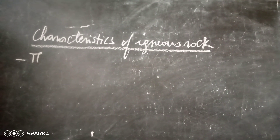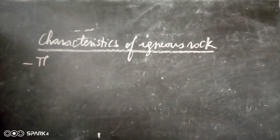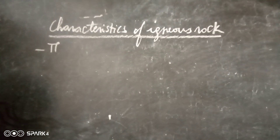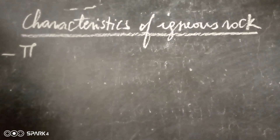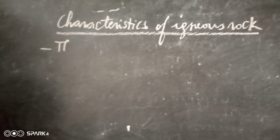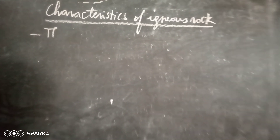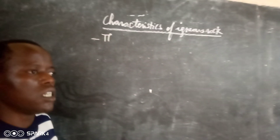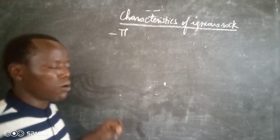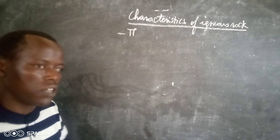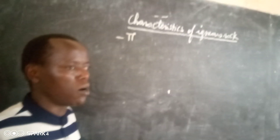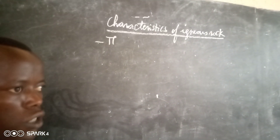Welcome again to this episode of Physical Geography, where we are still on the characteristics of igneous rock. Remember in the previous episode, we discussed about different categories of igneous rock, where we talked about extrusive igneous rock and intrusive igneous rock. Intrusive igneous rock is a type of rock which is formed when magma cools and solidifies inside of the earth crust, and extrusive igneous rock is formed when magma cools and solidifies on the earth surface.